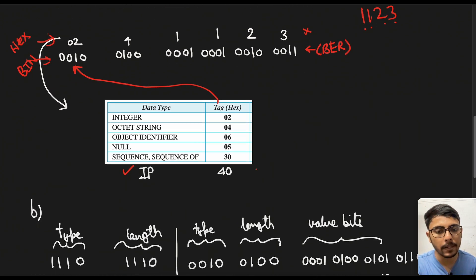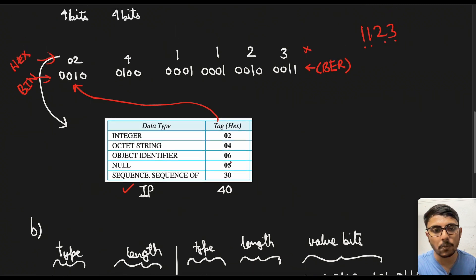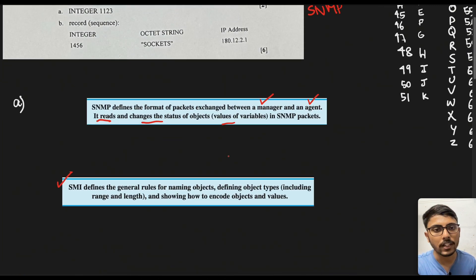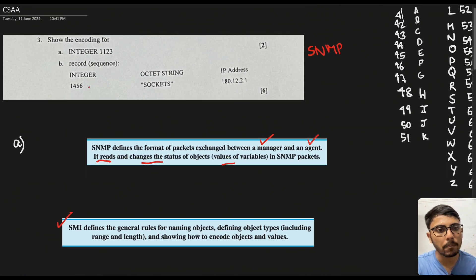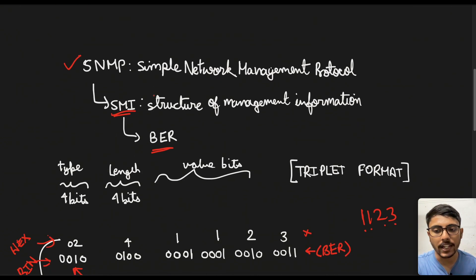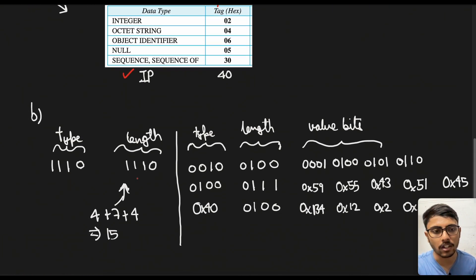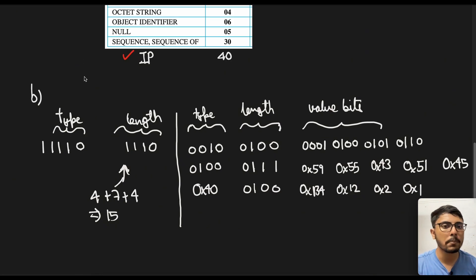Now we come to the B part which is basically the sequence. Why it is sequence? Because you see a particular integer, octet string, and IP address are given. And we need to have all this in one particular packet. Now we come to the B part of the problem which is basically a sequence.